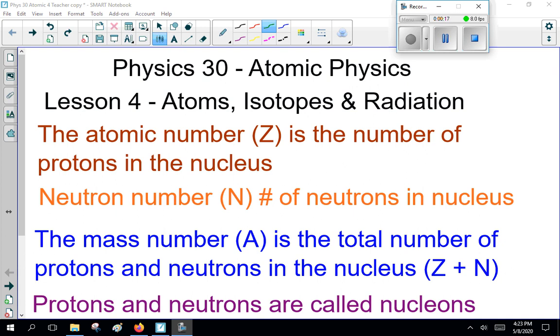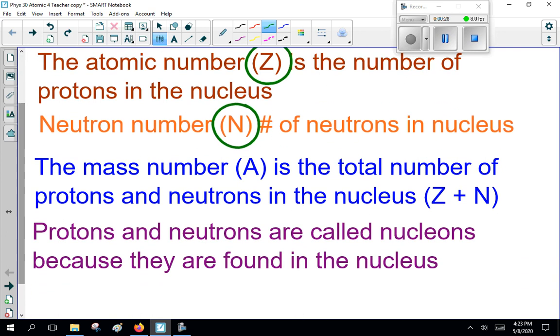The first thing, the atomic number Z is the number of protons in the nucleus. The neutron number N is the number of neutrons in the nucleus, while the mass number A is the total number of protons and neutrons in the nucleus. That's Z plus N. The protons and neutrons are called nucleons because they're found in the nucleus.